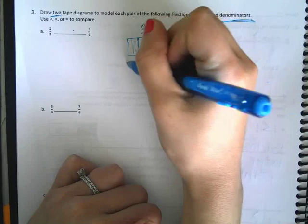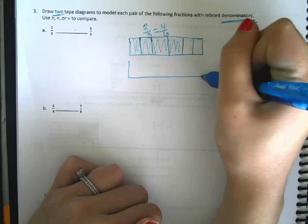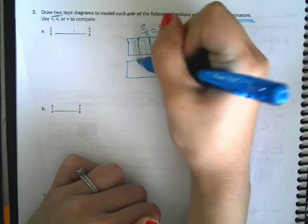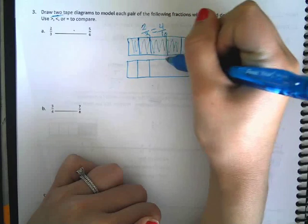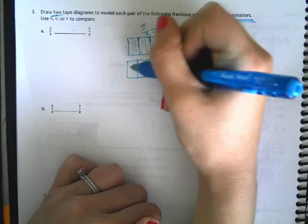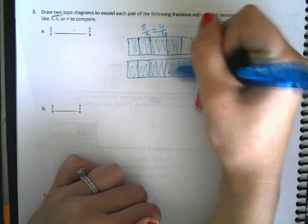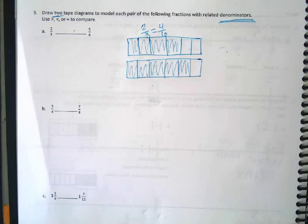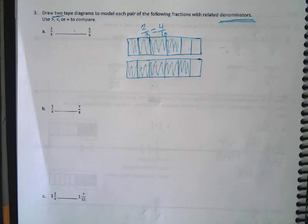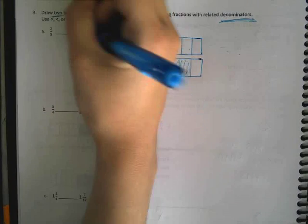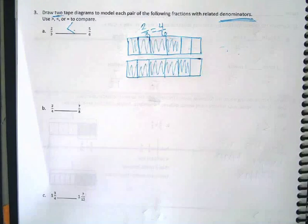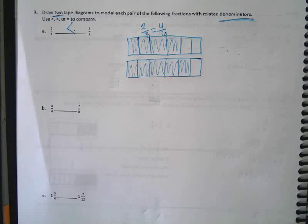And let's go ahead and draw our five-sixths right below it, and we should get a good picture of which one is bigger. Which one is bigger? Two-thirds or five-sixths? Five-sixths. Five-sixths, right? Not too bad? No.